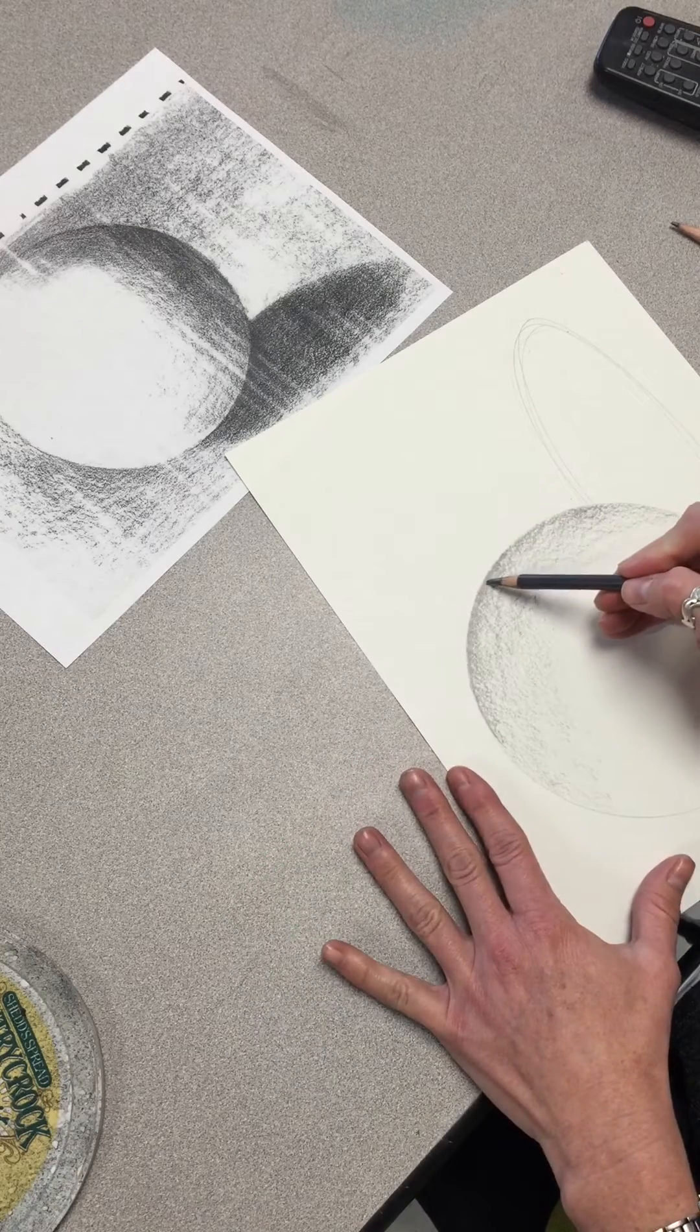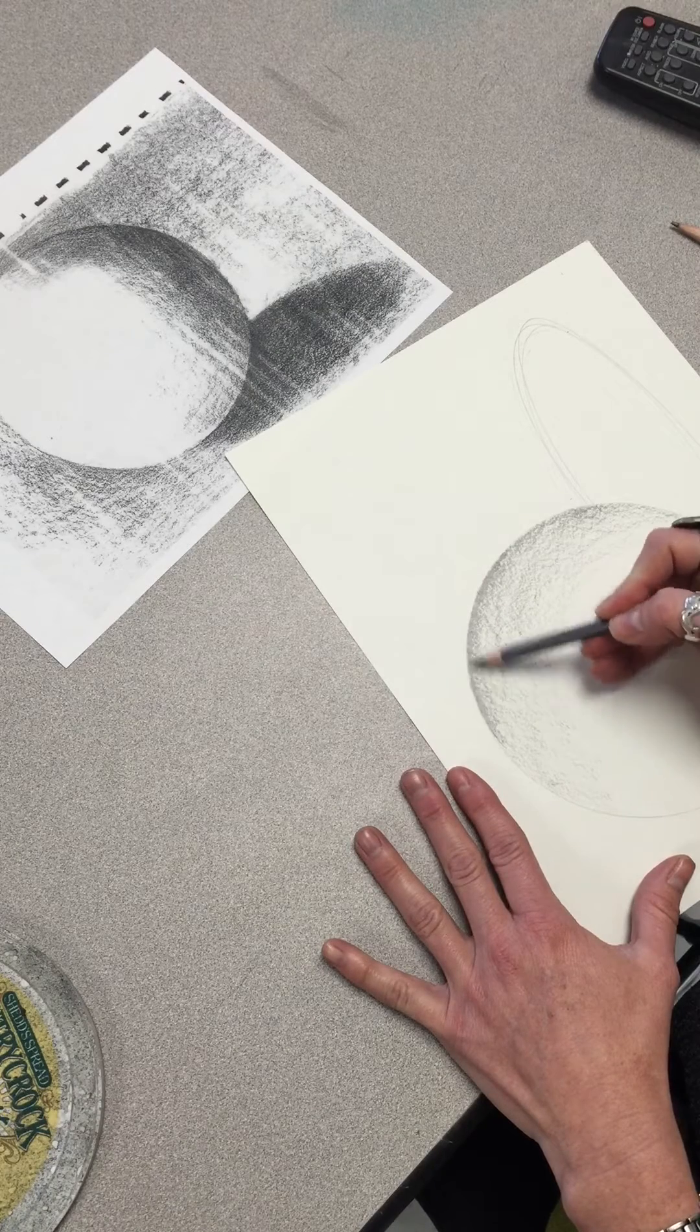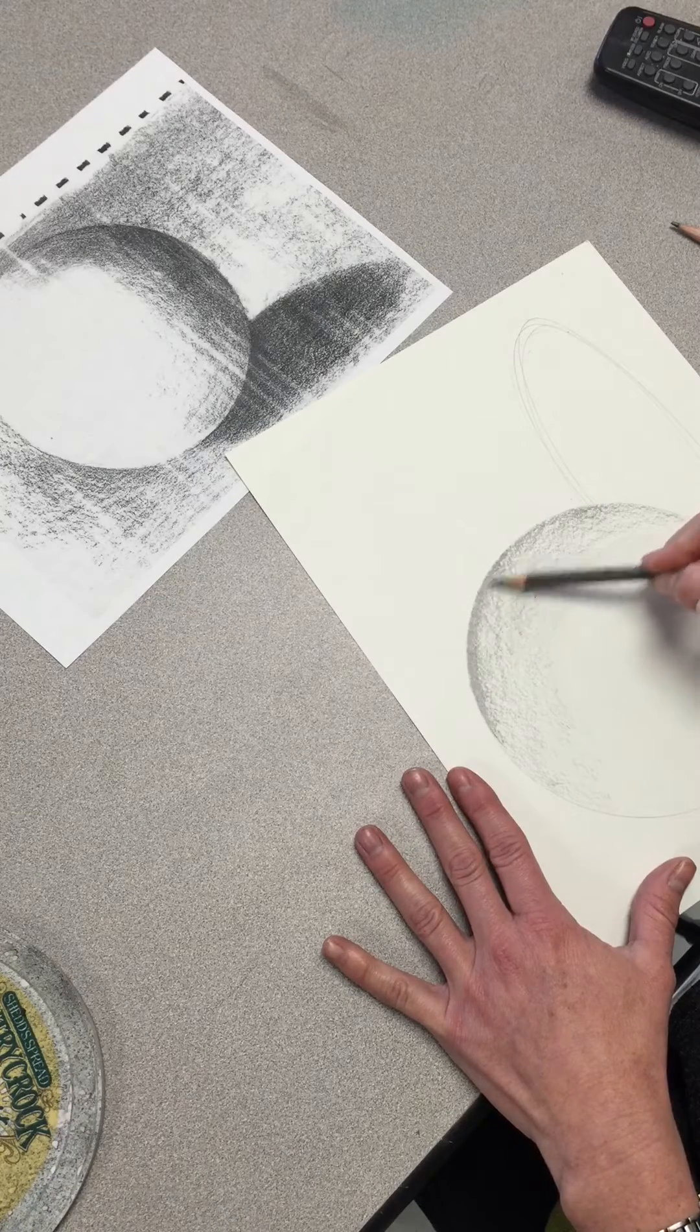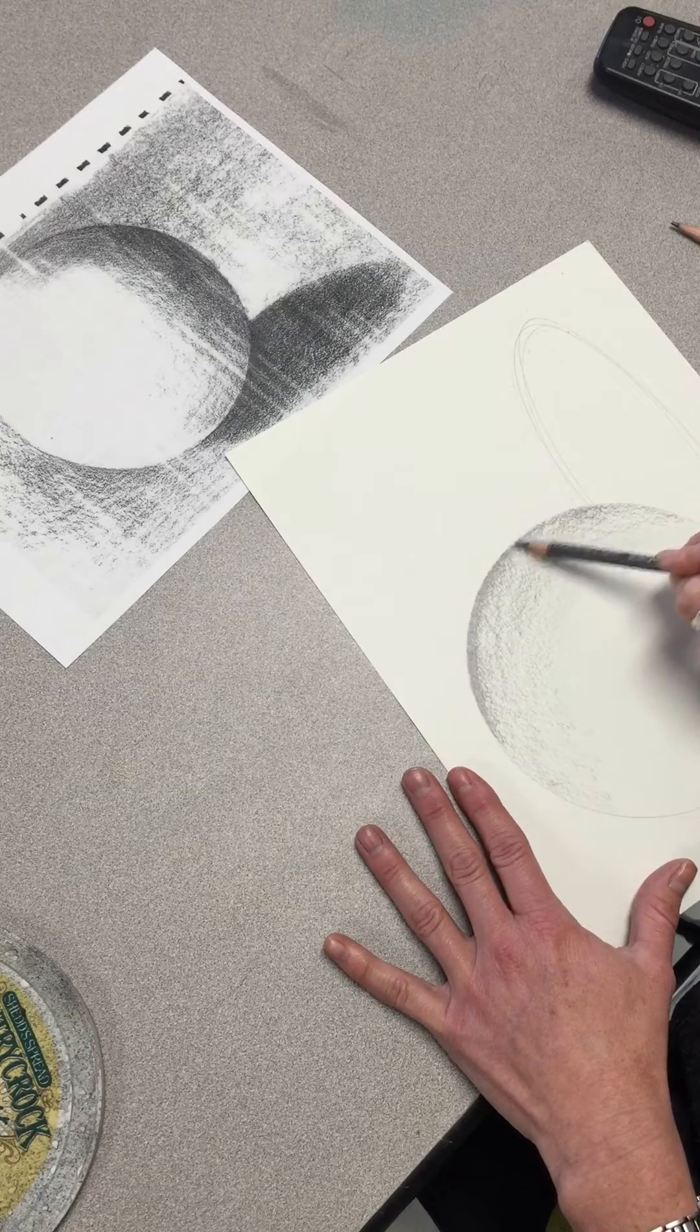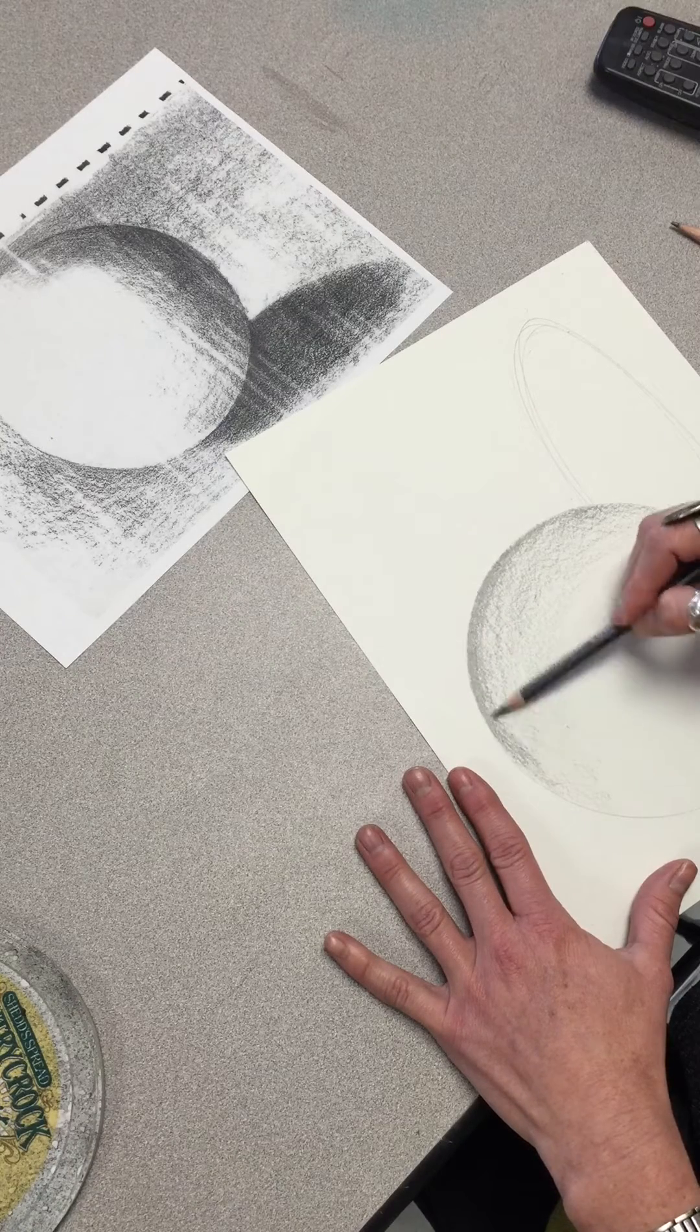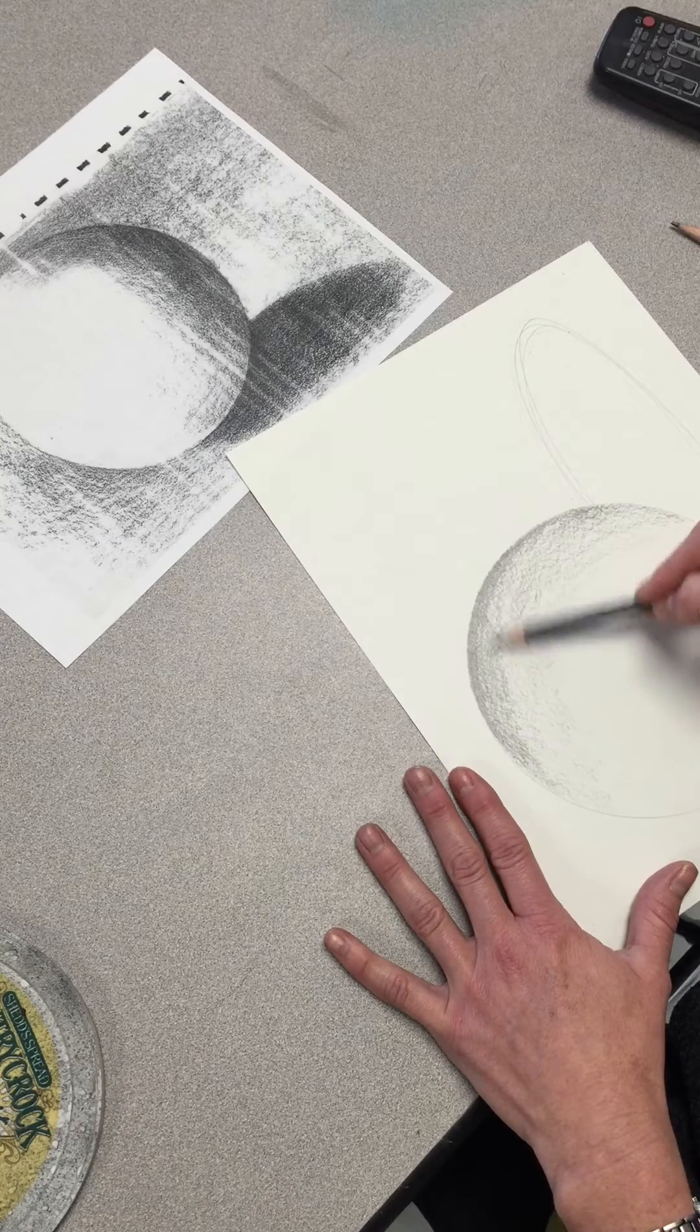Right now I just want to get the tip of the pencil to get on that edge, and then I'm going to hold my pencil sideways again and blend that black line in. You do not want to see a dark black line. You want to see a dark edge that fades into the rest of the sphere. I am blending it in now because it was a little too dark.